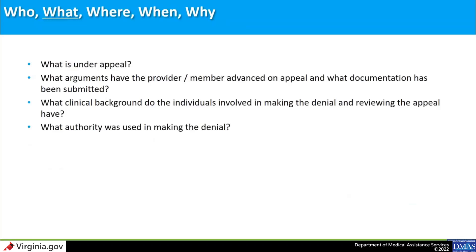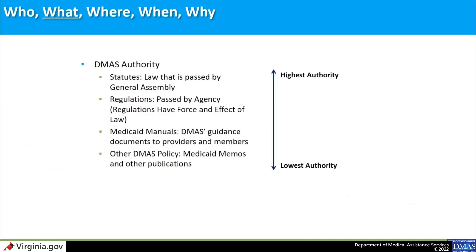What authority did DMAS or the DMAS contractor rely on in making the denial decision? DMAS relies on several types of authority, and there is a hierarchy, listed from highest to lowest: statutes — law passed by the General Assembly; regulations — passed by an agency, which have the force and effect of law; Medicaid manuals — DMAS guidance documents to providers and members; other DMAS policy; and Medicaid memos and other publications. These authorities are considered by DMAS, their contractors, and by IAAs when evaluating a provider appeal.